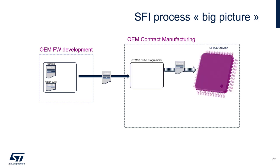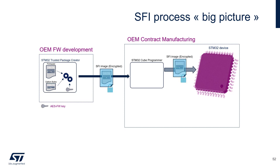The secure firmware install means you encrypt the data you send to your manufacturer. The firmware and option bytes are gathered into an encrypted file. To encrypt this file you need a key. SFI uses AES GCM cryptography to generate a .SFI file. Once your firmware is encrypted you can send it to the contract manufacturer safely.